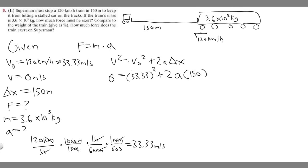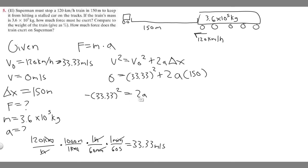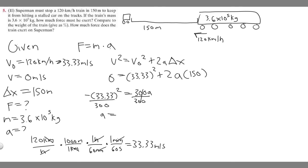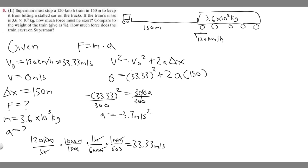Now we solve. Moving the v sub zero term to the other side: negative 33.33 squared equals 2 times a times 150. Multiplying 2 and 150 gives 300, so we have 300a. Dividing both sides by 300, we get a equals negative 33.33 squared over 300. Calculating this gives a equals negative 3.7 meters per second squared.